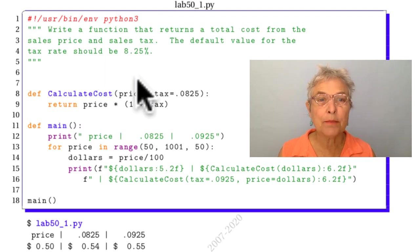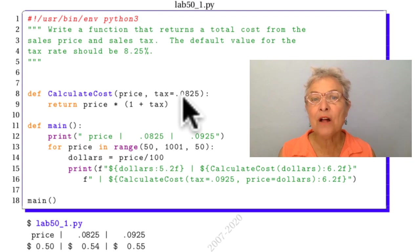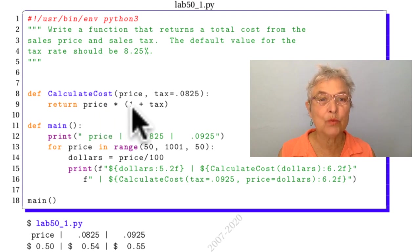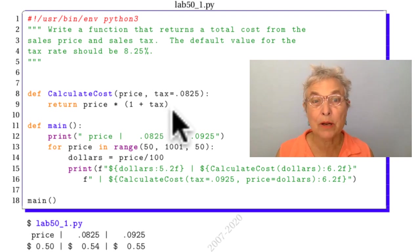This function takes in the price and a defaulted tax rate. Now here you see I defaulted at 0825, which is quite a bit of time ago in California. Then I return the price times 1 plus the tax and that gives us the whole cost. There's another algorithm you could do, doesn't matter.